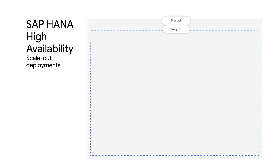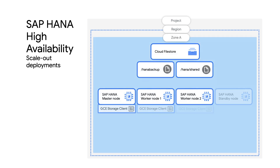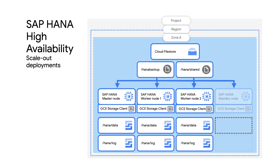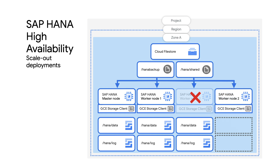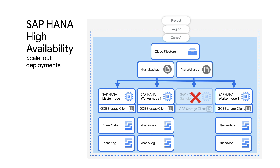For scale-out HANA systems — a scenario where multiple nodes are connected to form one combined database — you can deploy additional standby nodes that can take over in case one of the worker nodes fails. As you can see in this diagram, the data and log partitions of each node are attached to a single virtual machine instance. If worker node 2 is no longer available, the standby node immediately takes over: the data and log partitions are detached from worker node 2 and mounted to the standby node. This is executed by a storage plugin that works together with the SAP Storage Connector API. Once the failed worker node is available again, it will act as the new standby node.